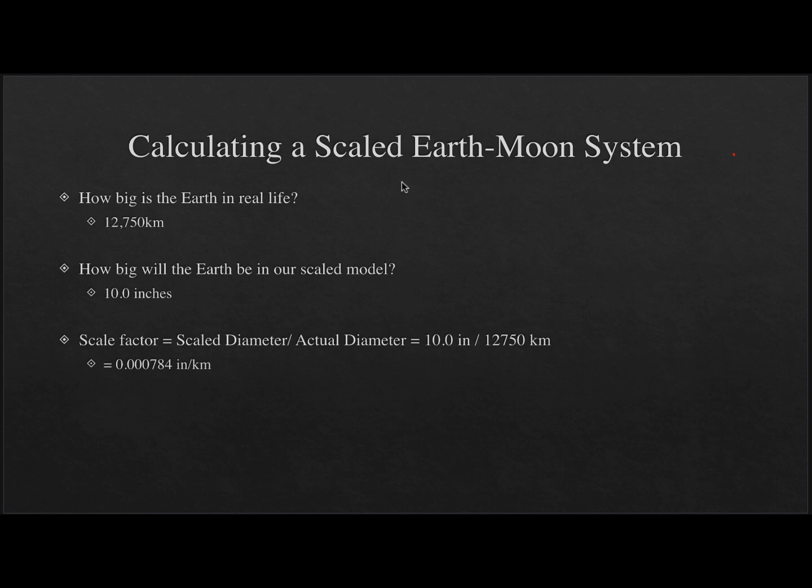So let's look at a couple of examples and how you would go about calculating this scale model. First of all, we're going to look at the Earth-Moon system. The calculations are exactly the same, you'd use the same style, just the numbers have changed. So what we're going to look at here, we have to find some numbers. First of all, we have to know how big the Earth is in real life. So that is 12,750 kilometers. In our scale model, we're going to scale it down to 10 inches.